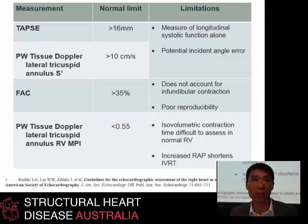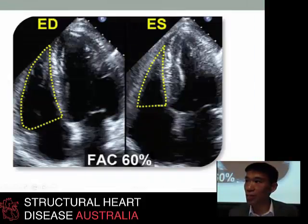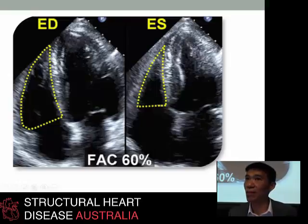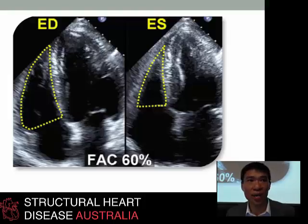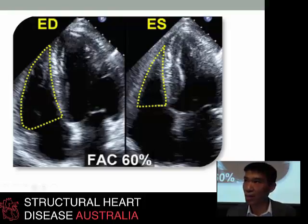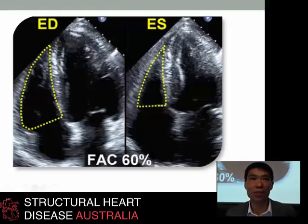There are some limitations to the use of TAPSE and S-prime in the perioperative context. Fractional area change has been discussed already. In particular, the trabeculated nature of the RV tends to confound manual tracings to get these measures done accurately and reproduced reliably within the same patient — but it also tends to foil automated border detection. So if any of you are using automated border detection for these calculations, it's important to do some manual tracing as well to reassure yourself the machine's not telling you lies.